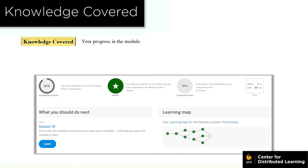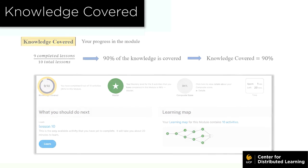Your progress is referred to as knowledge covered. If you have completed 9 out of 10 lessons in a module, then you have covered 90% of the knowledge. Your knowledge covered, then, is 90%.